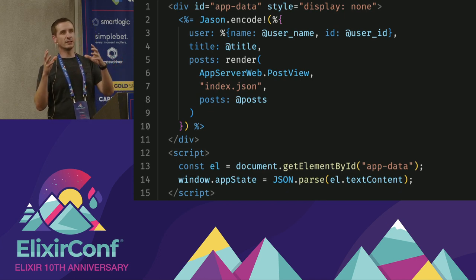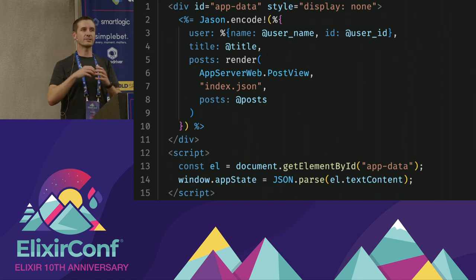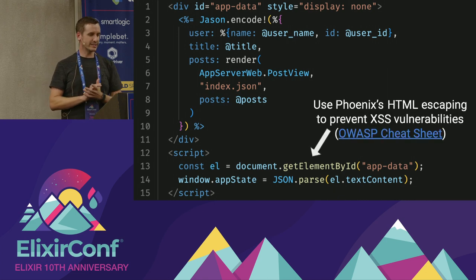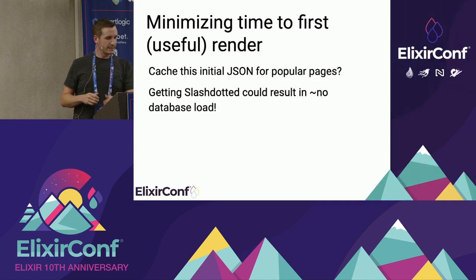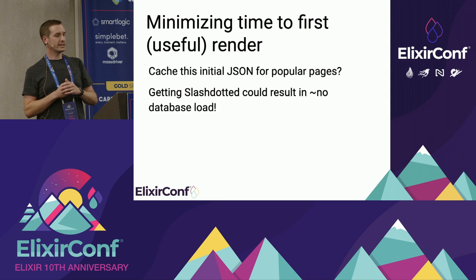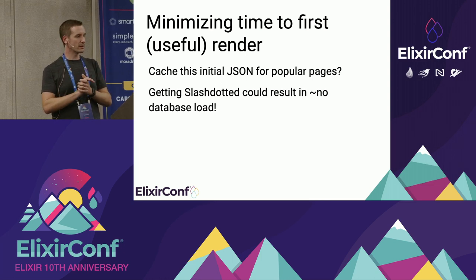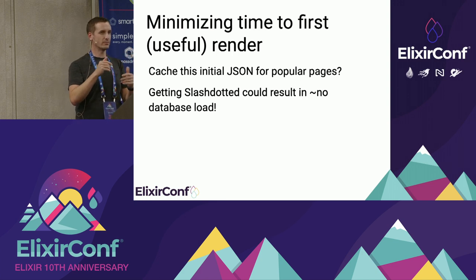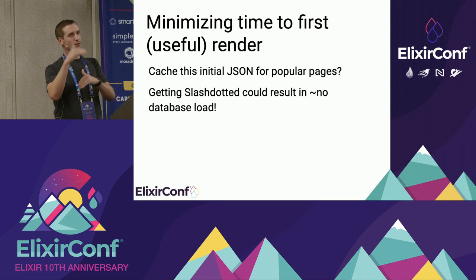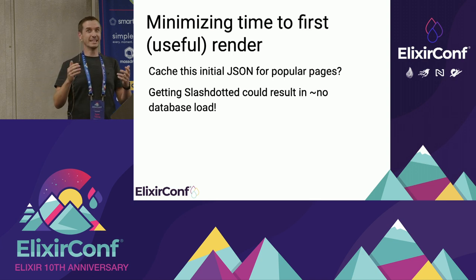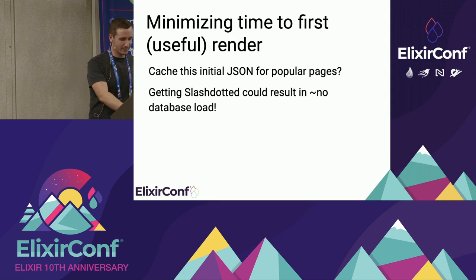Rather than just dumping a JavaScript object into a script tag, we actually dump it into a div and then use JavaScript to parse that and set the state from there. This avoids a cross-site scripting vulnerability because we get to leverage Phoenix's HTML escaping. The other advantage is that for users who are not logged in — in our case they don't have editing rights — we could potentially cache their entire experience: we can cache the JSON blob, we can cache the HTML. If we get slash-dotted or whatever, there would be very little load on our server. In practice we haven't actually done this because even when we were on the TechCrunch homepage, the server didn't break a sweat — blame Elixir and Phoenix for being too fast.